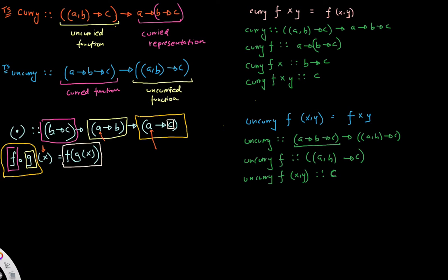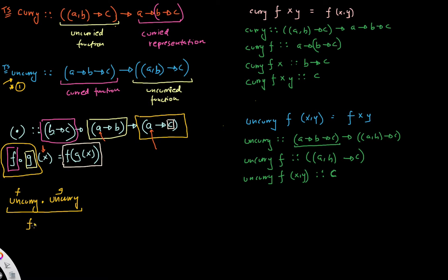Now I'd like to figure out what is the type signature for uncurry function-composed with uncurry. Before doing a full type inference, I'll note two things: I'm using uncurry as both my functions F and G, where one uncurry acts as F and the other as G, and I'm applying the function composition operator.